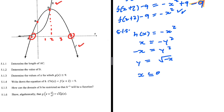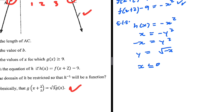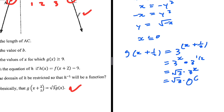5.1.6: show algebraically that g of x plus 1.5 equals square root of 3 times g of x. For g of x plus 1.5, we substitute x plus 1.5 in place of x, giving 3 to the power (x plus 1.5). Using exponential laws, this equals 3 to the x multiplied by 3 to the 1.5. And 3 to the 1.5 is the same as square root of 3, while 3 to the x is just g of x. So we have proved it.